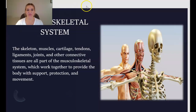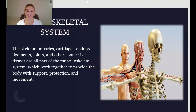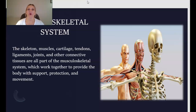The musculoskeletal system consists of the skeleton, muscles, cartilage, tendons, ligaments, joints, and other connective tissues. All of these components work together to provide your body with support, protection, and movement.